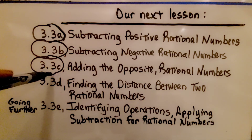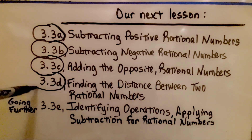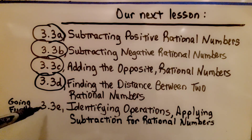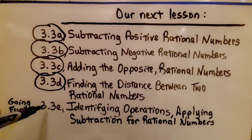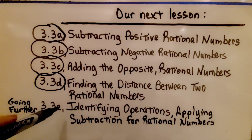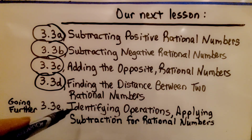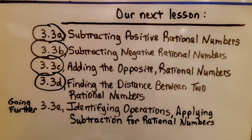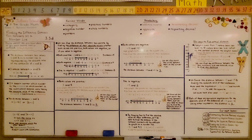We're finished with part D. We're going to move on to the last part, at the end of lesson 3.3, called Going Further: Identifying Operations. We're going to be applying subtraction for rational numbers. Keep your chin up — you've got this. I hope you'll join me for the last part of the lesson. Bye.